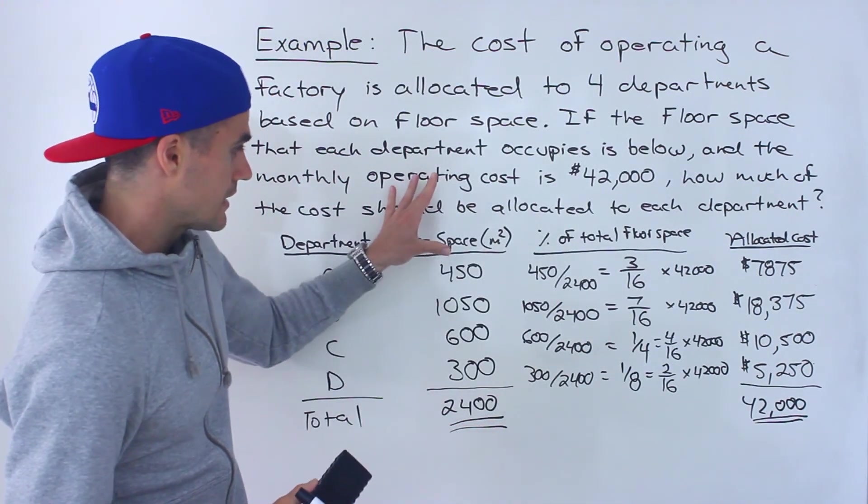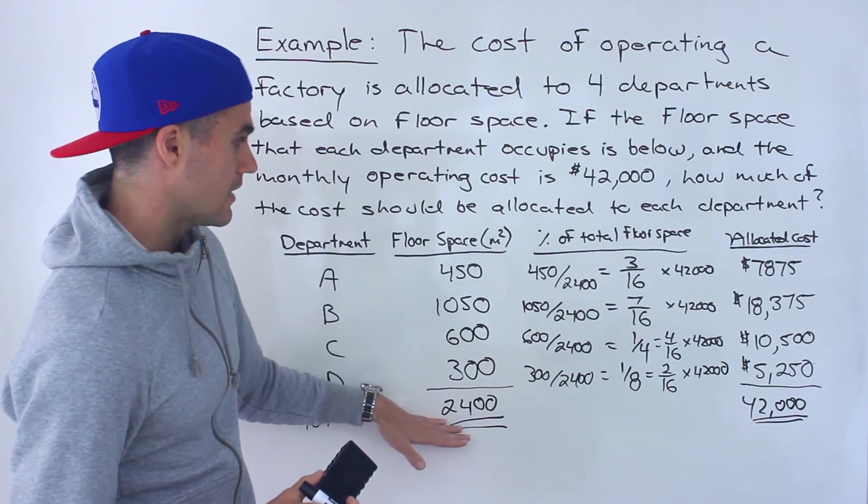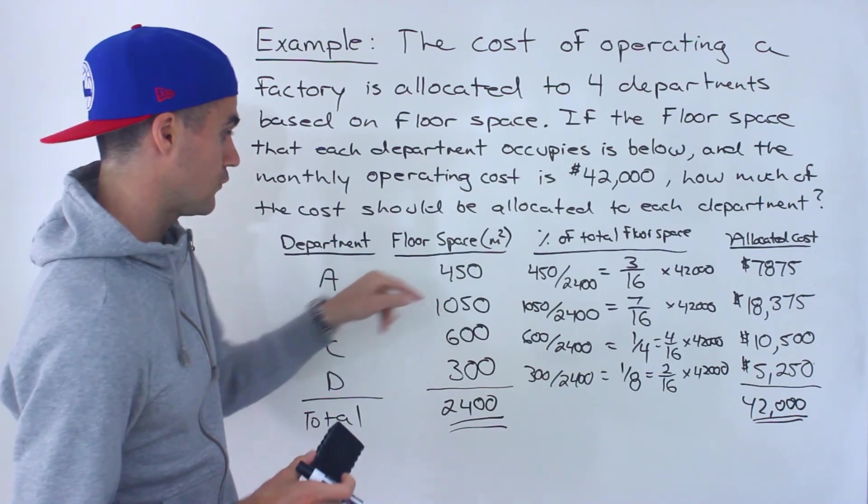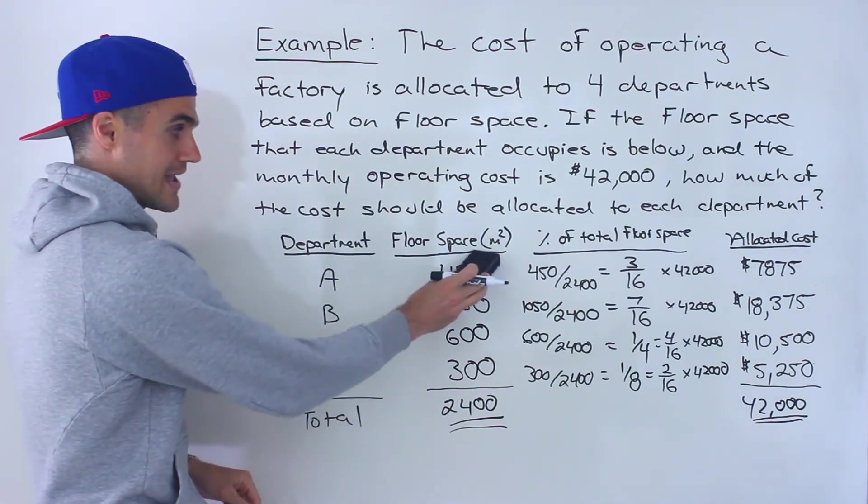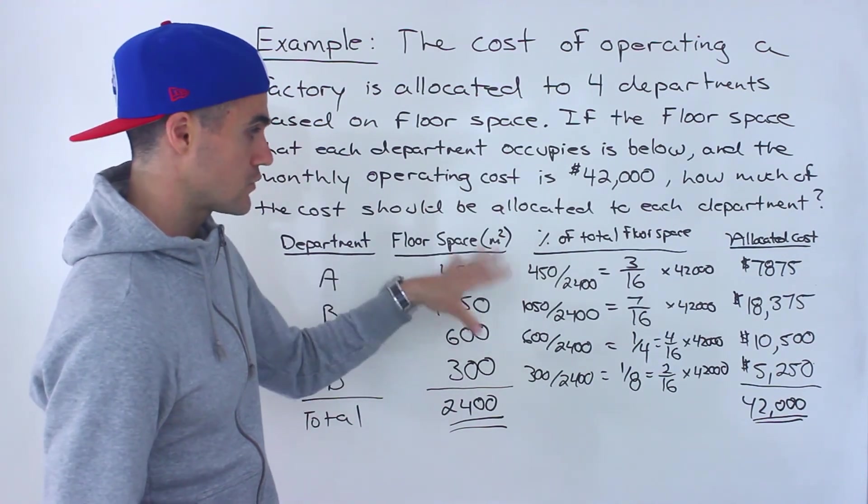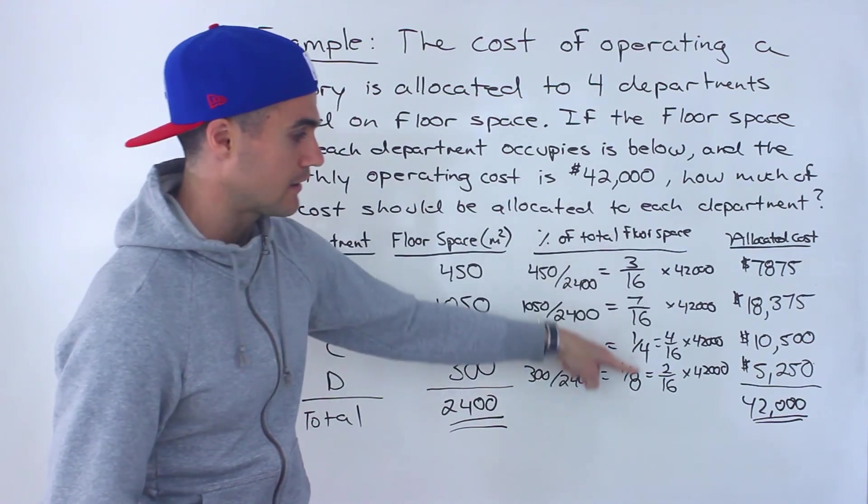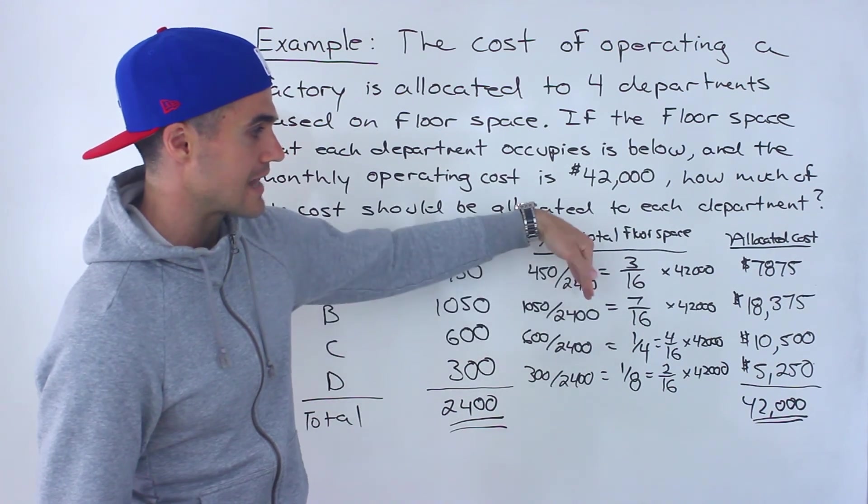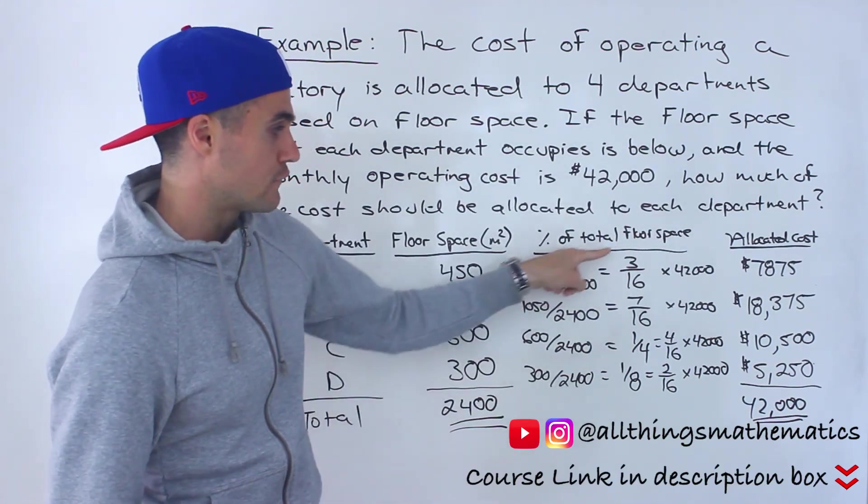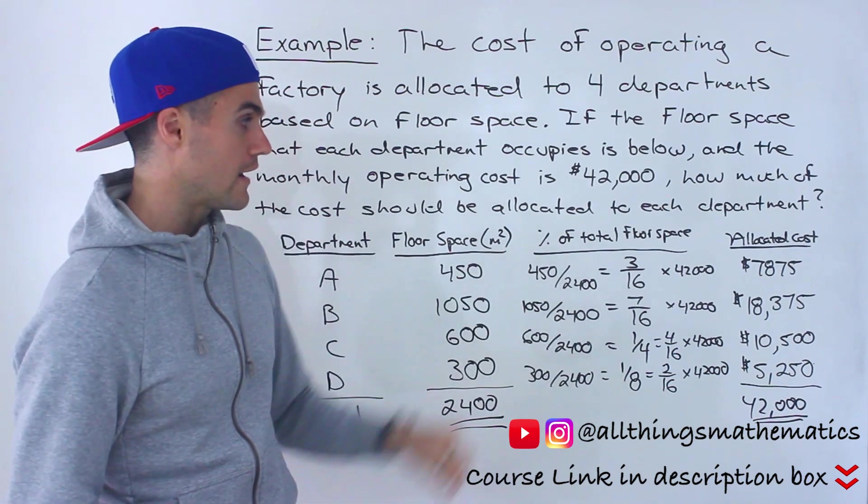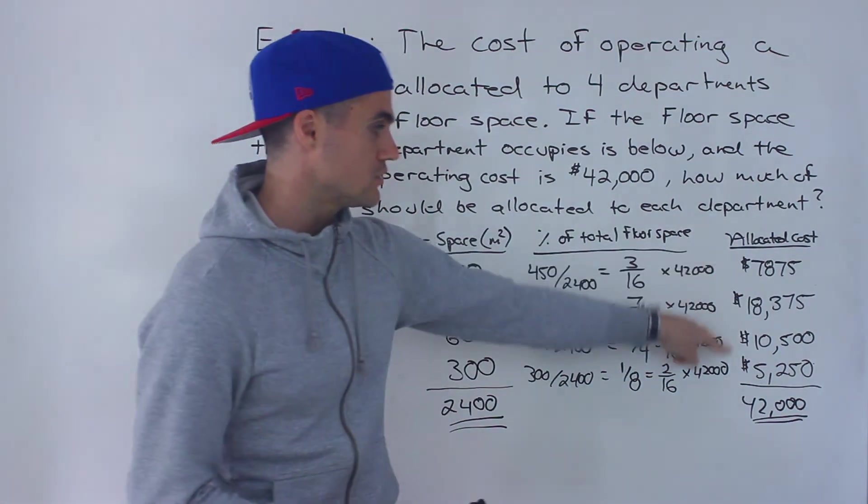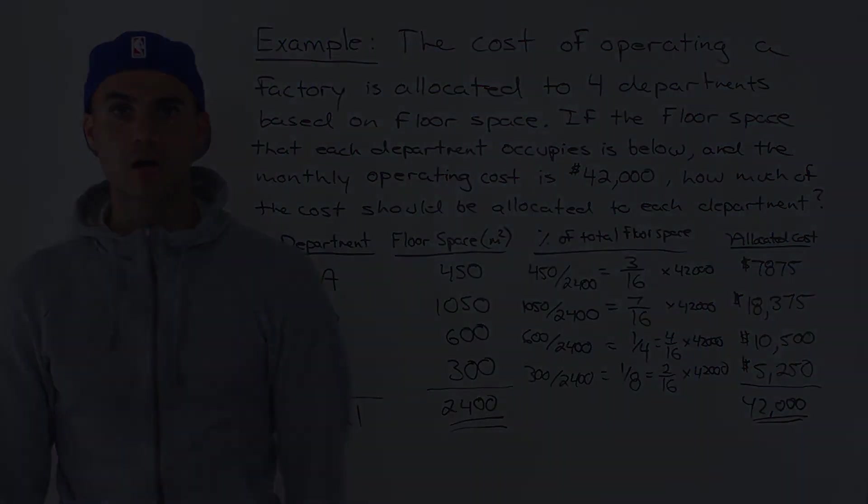So take the floor space, add it up, find the percentage of the total floor space for each department by taking that number, dividing it by the total. Again, I suggest whenever you get something like this, keeping it in fractions, just in case the decimals don't terminate and keep repeating. The fraction is going to give you a more exact value. And so taking the fractions, multiplying it by the 42,000, you get the respective allocated costs.